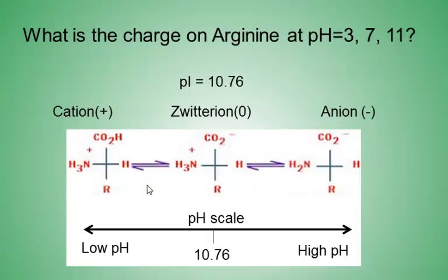And finally, arginine. The pI for arginine is 10.76. At pH 3 and 7, arginine is a cation. But at pH 11, arginine is an anion.